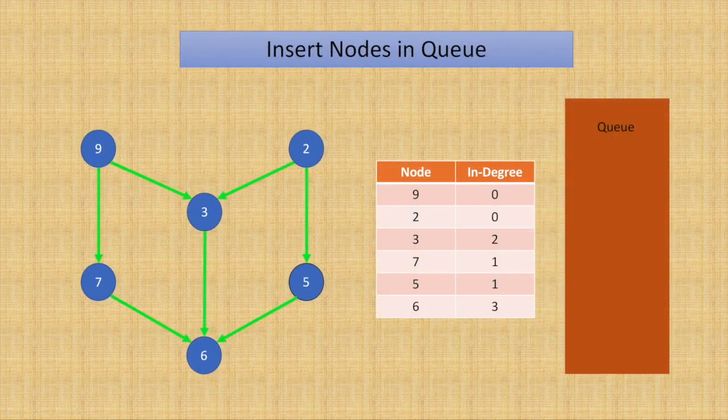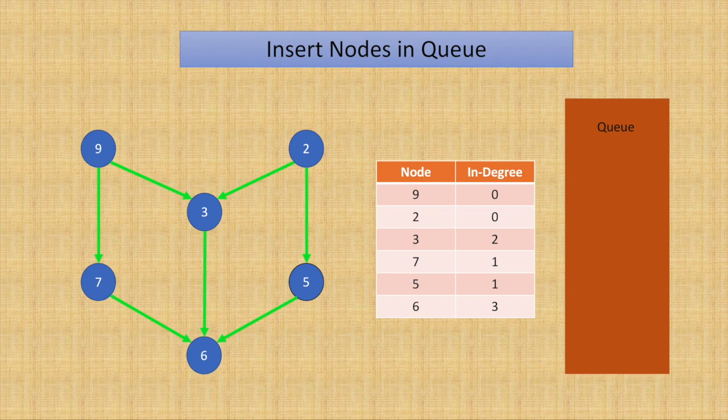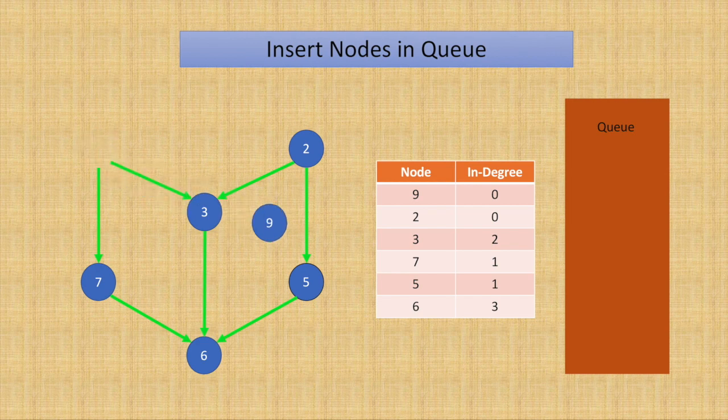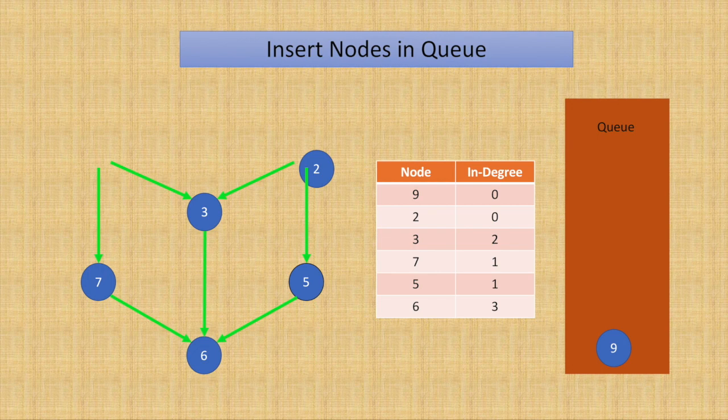Now once this is done, we'll figure out all the nodes with 0 in-degree and move them into a queue. So initially we have nodes 9 and 2 with in-degrees of 0, so we move them into the queue.